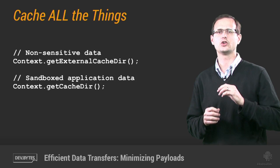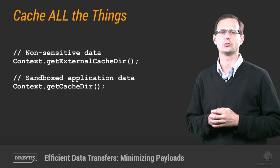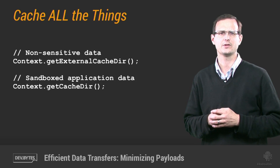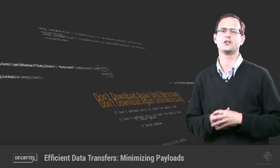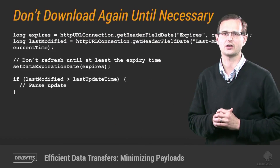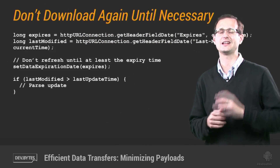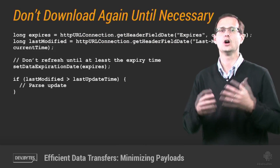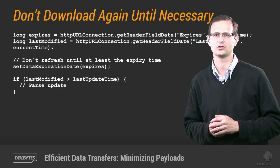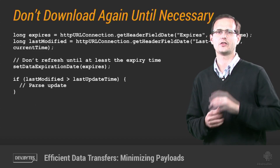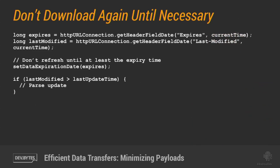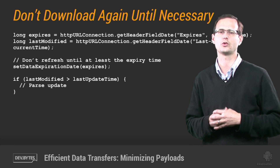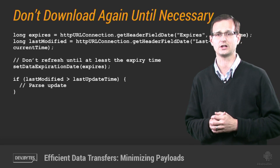In a lot of cases, you can determine when you should perform your next update by inspecting the HTTP response headers of your downloads. This is particularly useful for static or almost static resources like images. Looking at the header response, you can determine the time the downloaded data was changed and when it will expire, allowing you to schedule your cache refreshes accordingly.